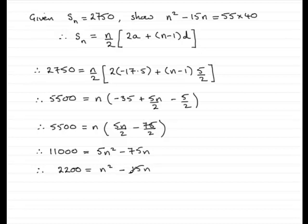So this is looking very similar now to what we've got up here. So if I just rearrange this, we've got n squared minus 15n equals 2,200. And 2,200 is in fact 55 times 40, so we might as well just write 55 times 40. So there we are, we've proved it. That brings us now to the end of that part of the question.